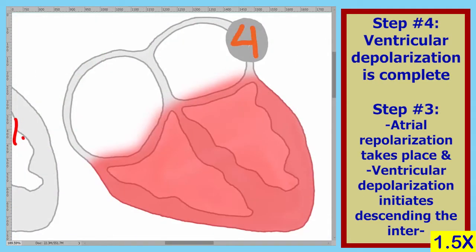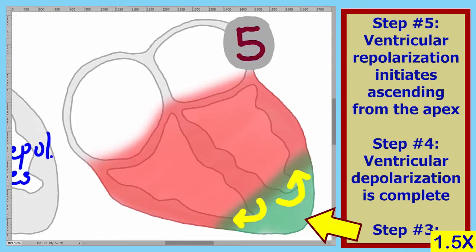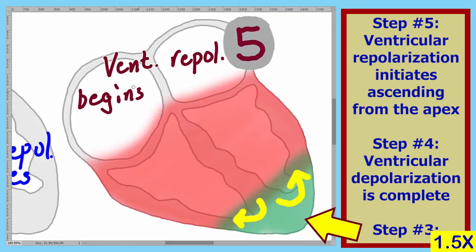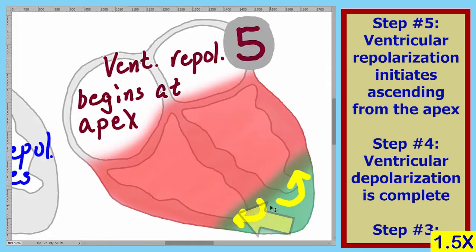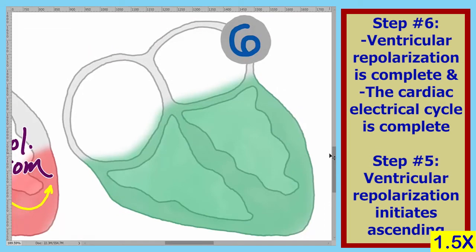In step four, ventricular depolarization is complete. In step five, ventricular repolarization begins at the apex. In step six, ventricular repolarization ends, and as shown here, the cardiac cycle is complete.